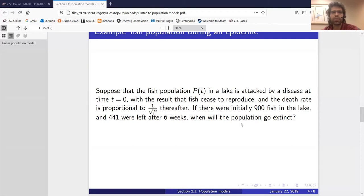Suppose that the fish population P(t) in a lake is attacked by a disease at time t equals zero, with the result that fish cease to reproduce, and the death rate is proportional to one over the square root of the population thereafter. If there were initially 900 fish in the lake, and after six weeks only 441 are left, when will the population go extinct?